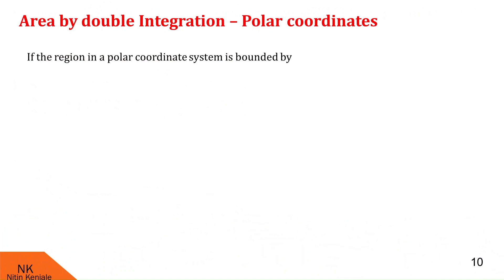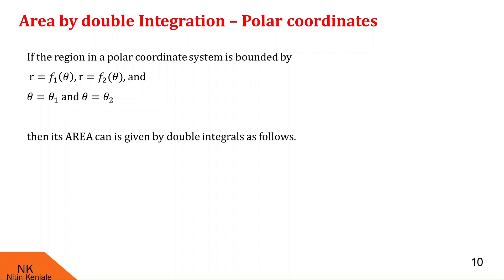Note that if the region in a polar coordinate system is bounded by the curves r = f1(θ), r = f2(θ), and θ = θ1 and θ2, then its area can be calculated using double integrals as follows. The area is given as the double integral of r dr dθ over the limits f1(θ) to f2(θ) and θ1 to θ2. Now let us see examples based on this concept.